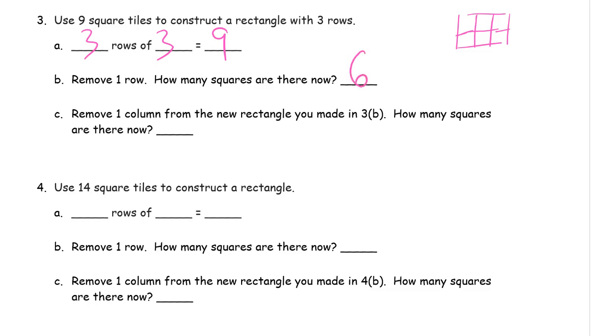Now remove a column. I'm going to erase this column here. And you've seen, we've had problems like this before. So let's see. Remove a column. How many squares are there now? There's 4.